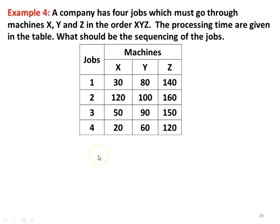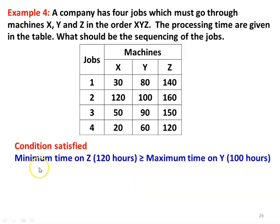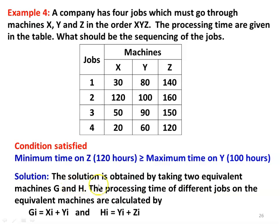We have to find the total elapsed time and the idle time for machines X, Y, and Z. The condition is satisfied: minimum time on machine Z is 120 hours, which is greater than or equal to maximum time on machine Y, which is 100 hours. So the condition is satisfied and we can proceed with the solution procedure. The solution is obtained by taking two equivalent machines G and H, replacing X, Y, Z.